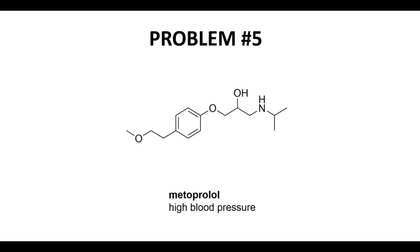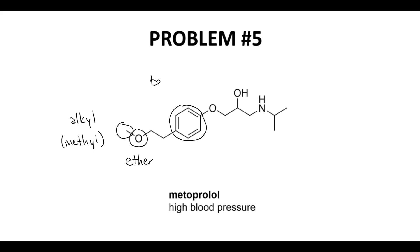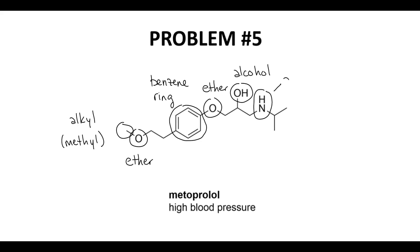This drug is called metoprolol. On the far left, this is an alkyl group — a one-carbon alkyl group is called a methyl group. This is an oxygen attached to two carbon groups; that's an ether. Benzene rings are always easy to circle. This would be another ether. This OH is an alcohol. Here is a nitrogen without a carbonyl next to it — this is an amine. And here's another alkyl group; this is called an isopropyl group. So those are the main functional groups in metoprolol.